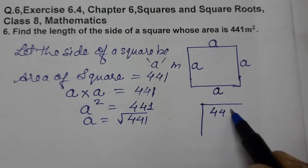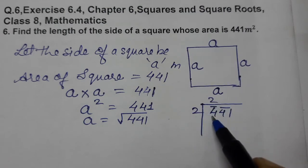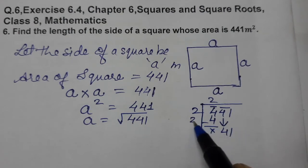By division method: 2, 2 pair, 2 times 2 is 4, subtract, 0, carry down 41. 2 plus 2 is 4. How many times? One time. 41 once is 41.